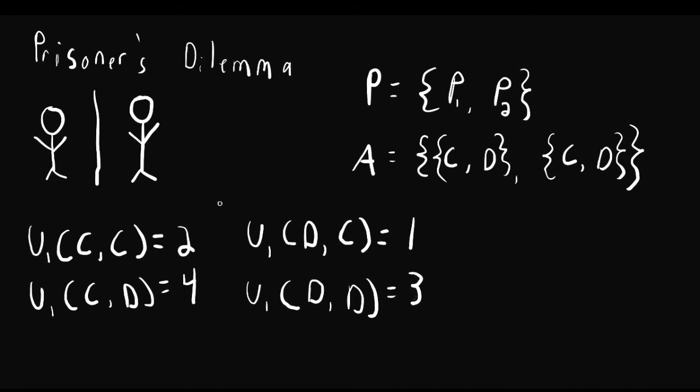When they both don't confess, Player 2 also gets a payoff of 3. And then these are flipped for Player 2. So for example, if Player 1 doesn't confess and Player 2 does confess, then Player 2 gets the reward of 4 for blowing his partner in, and so on.